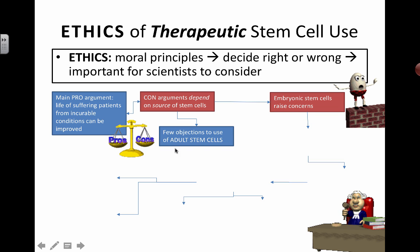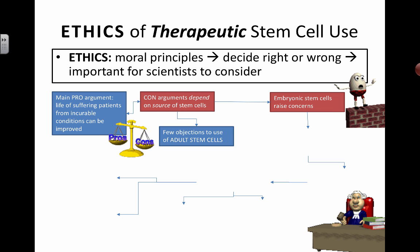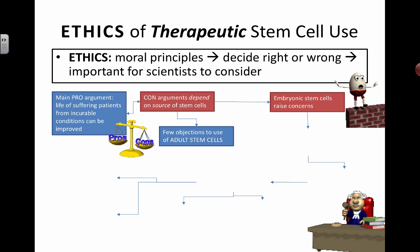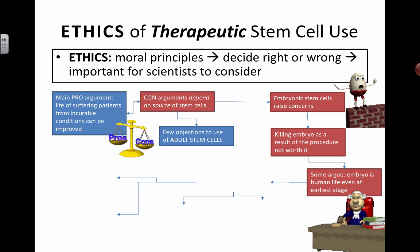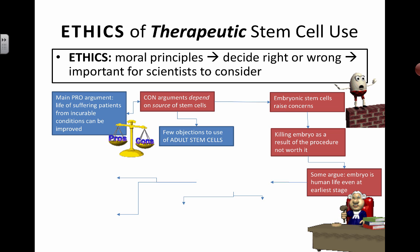If it's adult stem cells, everyone's pretty cool with that. But if it's embryonic stem cells, concerns get raised because we're talking about taking stem cells from humans who have not yet fully developed and have the potential to turn into new life. Some people say killing the embryo — taking stem cells from the embryo means it won't be able to develop into a new human life. To a lot of people, even if the embryo hasn't developed a nervous system or beating heart cells, it's still potentially a life, and therefore killing it is like taking life away.